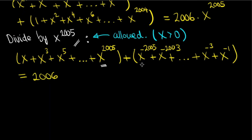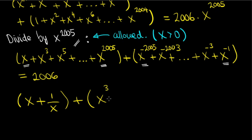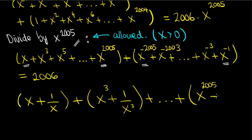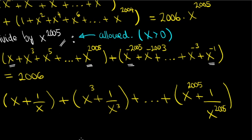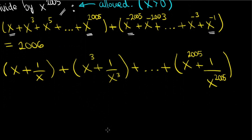The pattern is that we pair these terms together: x plus 1 over x, plus x cubed plus 1 over x cubed — this starts to look nicer and more workable — and so on until x to the power of 2005 plus 1 over x to the power of 2005, and of course this all equals 2006.